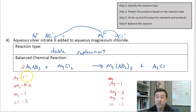But it also gives me two silvers. Now my silver is out of balance, so that means I need to put two right here to balance that.